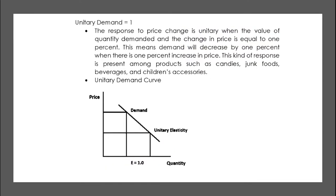Unitary demand, on the other hand, is equal to one. It is also known as unit demand. The response to price changes is unitary when the value of the percent change in quantity demanded relative to percent change in price is equal to one. This means that demand will decrease by one percent when there is a one percent increase in price. This kind of response represents products such as candies, junk foods, beverages, and children's apparel or accessories. The curve of unitary demand looks like this — there are differences in the graphs of the different types of elasticity of demand.